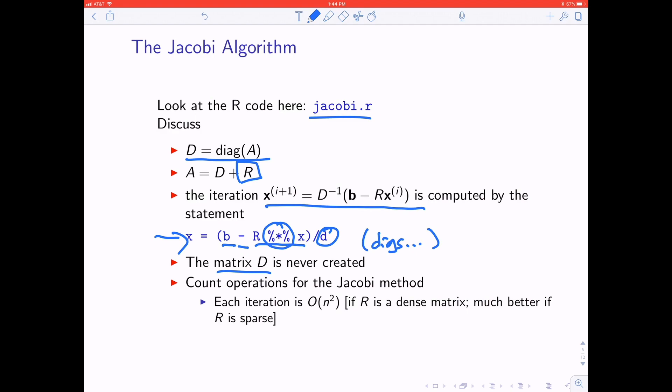It's not too hard to convince yourself that every iteration is order N squared. It could be even faster if R turns out to be a sparse matrix, but at worst it's order N squared. And you'll notice that that's way faster than order N cubed for direct methods like LU decomposition. So what you lose in directness, you gain in speed for this algorithm.